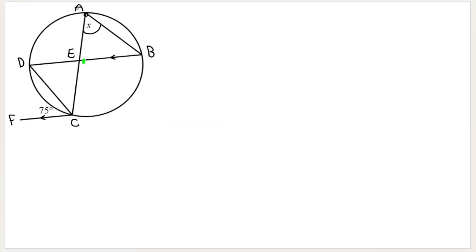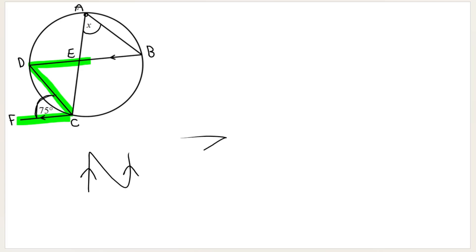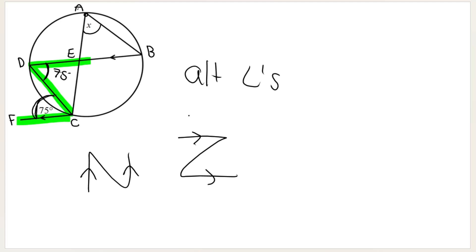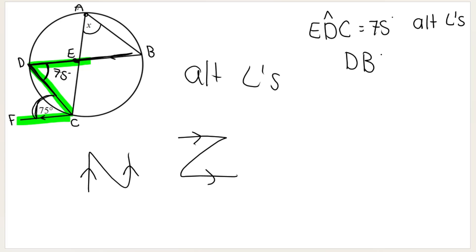I see these parallel lines in this diagram. I'm looking for x but first what I can see is that this angle over here is 75 degrees. Using my two parallel lines I see the letter N, or some people think of it as the letter Z. Either way I know that I'm dealing with alternate angles and we know that alternate angles are equal. So if this angle is 75, this angle is also equal to 75.